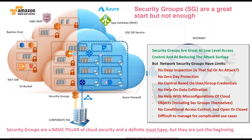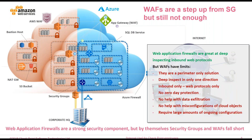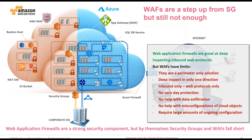Con respecto al WAF, si bien es una buena protección, no es suficiente porque solamente va a analizar el puerto 443/8443. Además, los WAF solamente van a proteger tráfico de entrada, tráfico que viene desde Internet hacia nuestras instancias públicas. Cualquier otra comunicación dentro de la nube no la va a ver el WAF, porque son elementos de protección a nivel de perímetro. Si bien es un buen punto de partida para proteger los web services, no es suficiente.